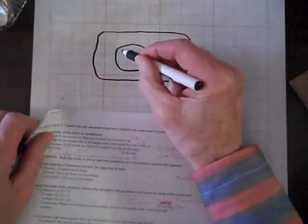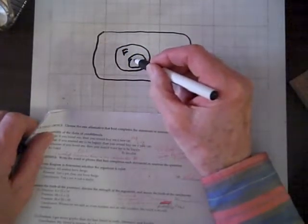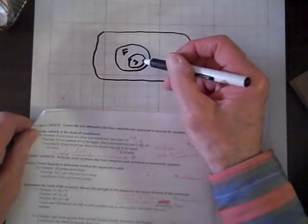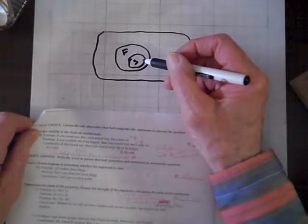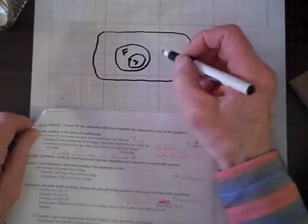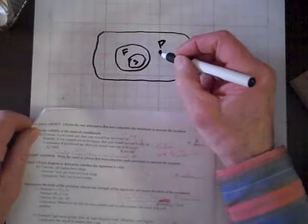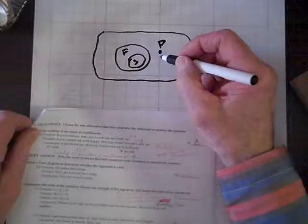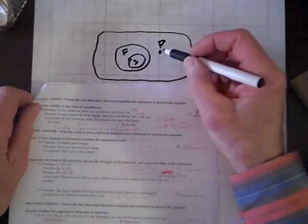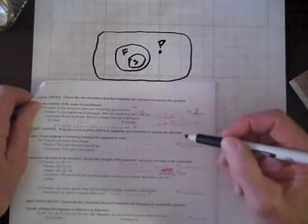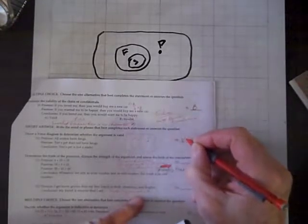Number 10. Draw a Venn diagram to determine whether the argument is valid. All snakes have fangs. So, among all the creatures with fangs, there are snakes. Terry's pet does not have fangs. So, these are fanged animals. This pet's out here. It doesn't have fangs, thankfully. Terry's pet is not a snake. I would say we've got a valid situation here. All snakes have fangs, and this creature doesn't have a fang. So, clearly it's not a snake. We're talking valid.